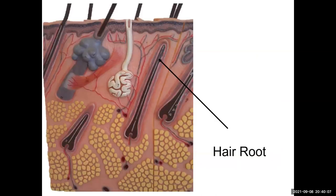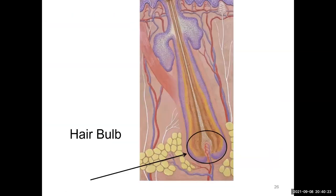Simple rule: if hair is above the surface of the skin, it's called a hair shaft. If it's below the surface of the skin, we call it a hair root. Hair shaft above, hair root below — just like the root of a tree is in the ground, and the trunk is above the ground.